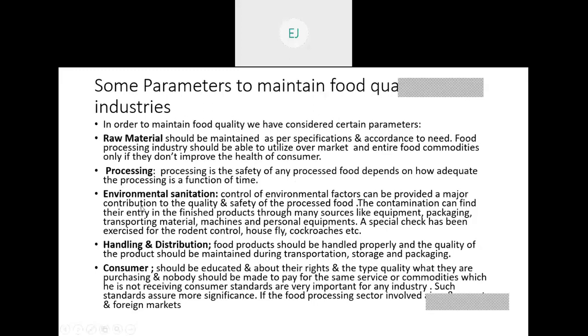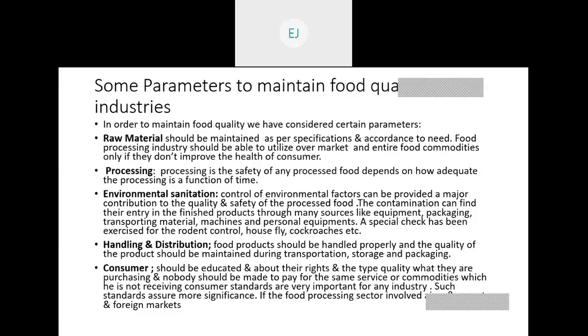The third parameter is environmental sanitation. Your environmental sanitation is very important because your production area and processing area must be clean and sanitized, otherwise your food can be contaminated. And handling and distribution is also an important factor — you should handle or distribute the food in the proper way. For example, if you are transporting milk, you have to transport that milk in a chilled or freezer van; otherwise, your milk can be spoiled.